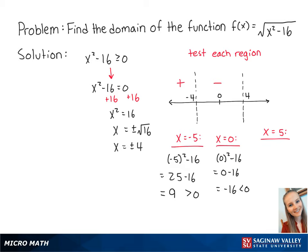Now we'll test when x is greater than 4 by plugging in 5. So we get 5 squared minus 16, which is equal to 25 minus 16, which is equal to 9, which is greater than 0. So there will be a positive number underneath the square root when x is greater than 4.